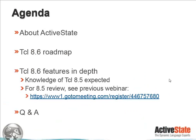Good morning, everyone. First, I'm going to go into a little discussion about ActiveState and where we sit in the development world. Then a quick launch into the 8.6 roadmap and discuss 8.6 features in depth. There is an expectation that most attendees will know what is in 8.5 already, because I'll only be discussing 8.6. For those of you on 8.4 or earlier who want a review of 8.5, please see our previous webinar at this URL. And then we'll follow up at the end with some Q&A.